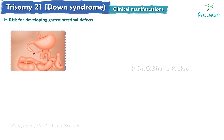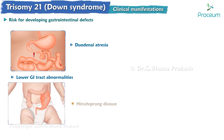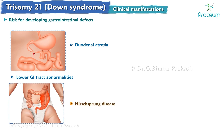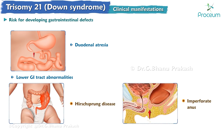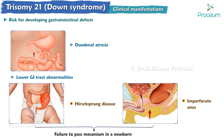Patients with Down syndrome are at risk for developing gastrointestinal defects. Most importantly, duodenal atresia is associated with Down syndrome. Lower gastrointestinal tract abnormalities include Hirschsprung disease and imperforate anus. Notably, both of these present as failure to pass meconium in a newborn.